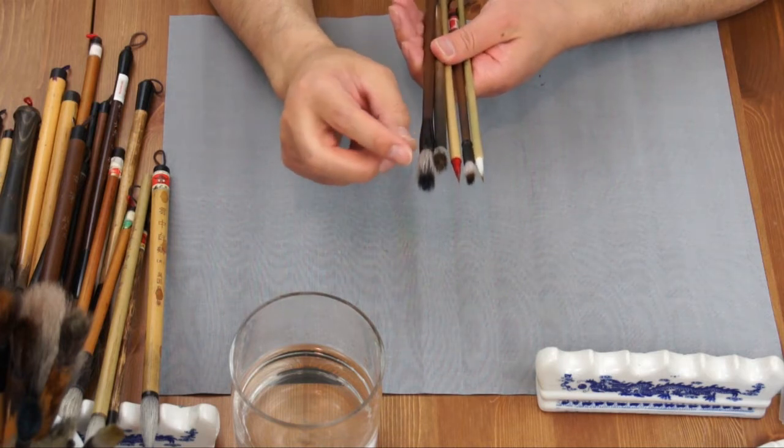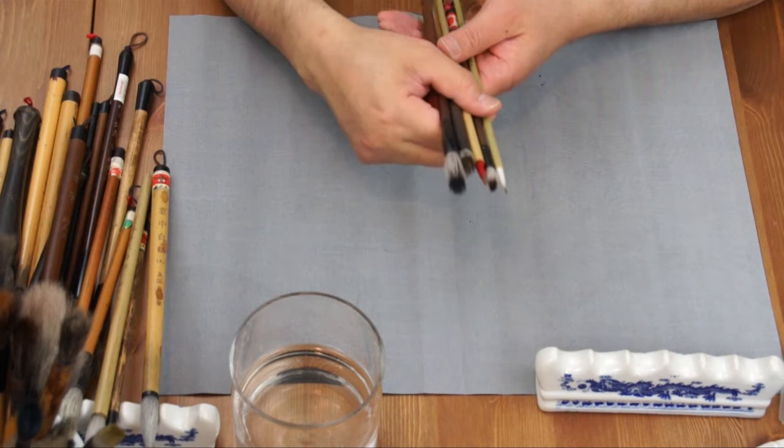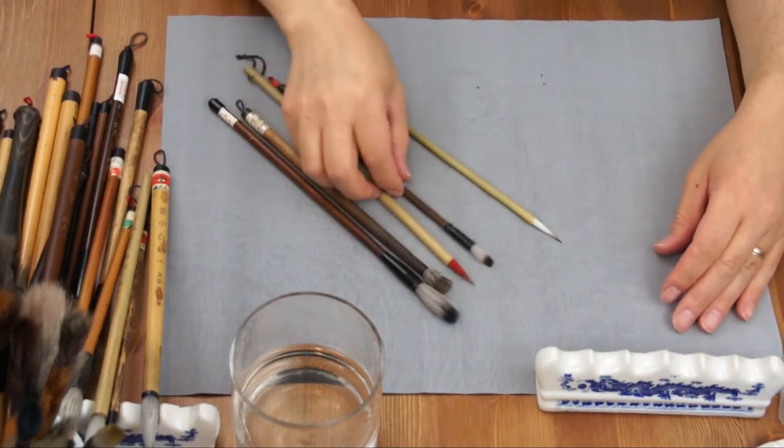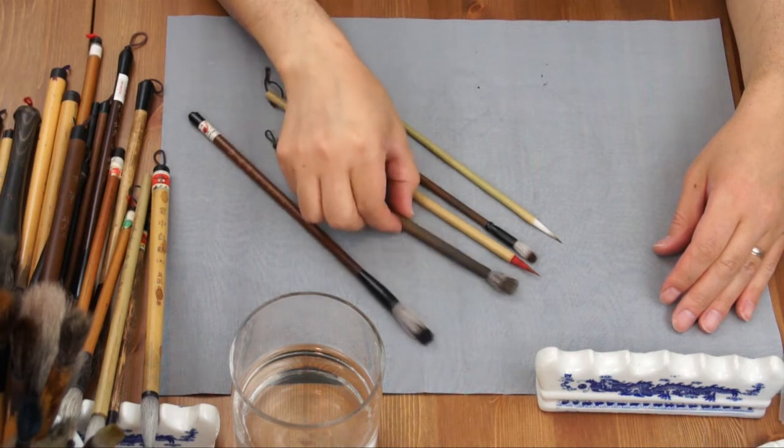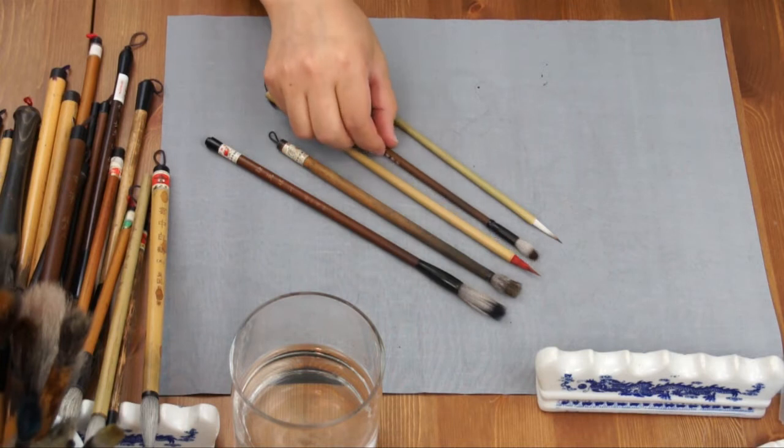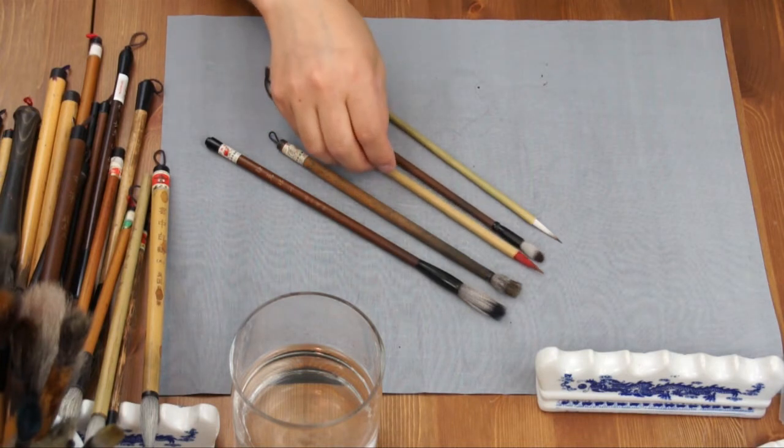The soft surrounding brush serves as a reservoir to hold the moisture, while the hard core forms a sharp tip for lining or doing sharp fine strokes.